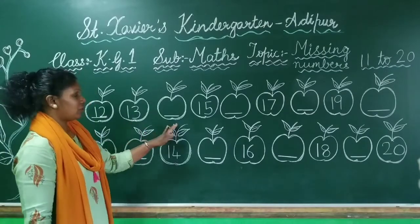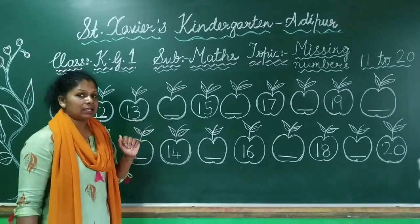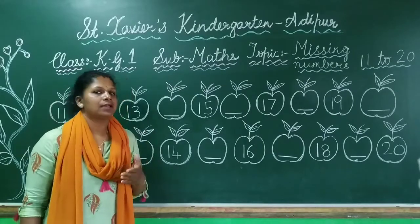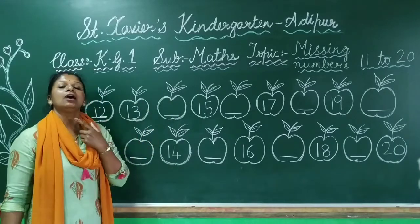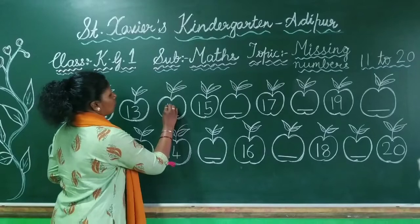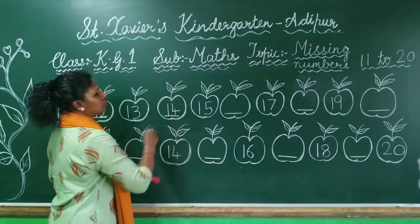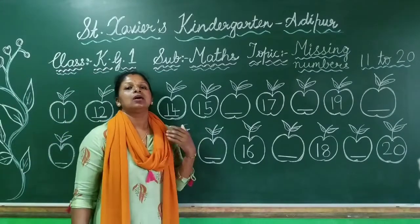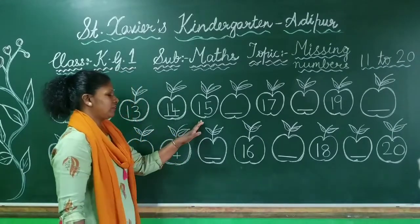Here we go. 1, 4 — 14. Yes. 1, 4 — 14. Correct. What number is next? 1, 5 — 15. Yes. 1, 5 — 15.